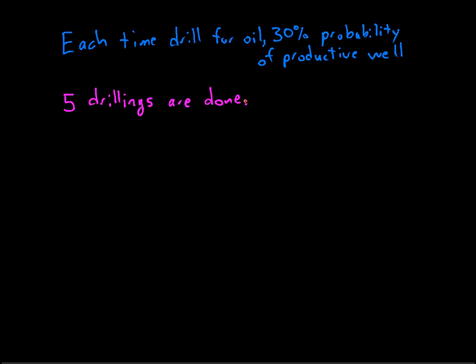So we drill five times and my random variable X this time will be the number of productive wells that result from this drilling. So it could be we have no productive wells, it could be we have one, we have two.